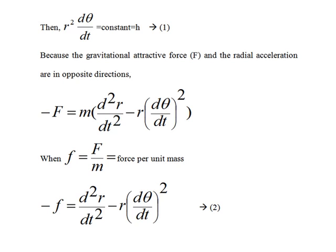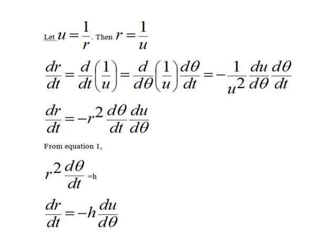Now we are going to solve this second order differential equation by introducing a new variable u, where u is equal to 1/r. Then dr/dt is equal to minus r squared times dθ/dt times du/dθ. From equation number 1, r squared times dθ/dt is equal to h, so dr/dt is equal to minus h times du/dθ.